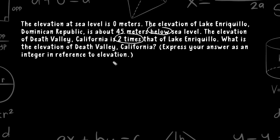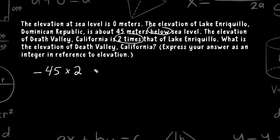It is given that this lake in the Dominican Republic is 45 meters below sea level, so we write that as the integer negative 45. It says that the elevation of Death Valley is two times that of this lake, meaning Death Valley is about twice the distance below sea level. So negative 45 times two is equal to negative 90.